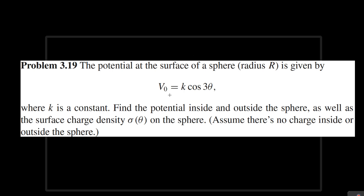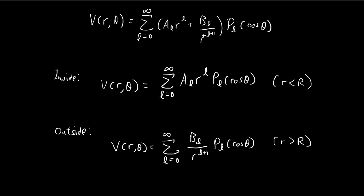In this problem, we need to find the potential outside and inside of a sphere. I already have some steps down — this is the general solution, and this is the potential inside the sphere, where the b term is equal to 0 because when r equals 0 this term would be a problem. For the outside term, a is equal to 0 because we want this term to be 0 when r tends to infinity. Now that we've broken up the potential into the inside and outside cases, let's find the inside potential first.